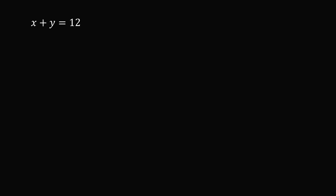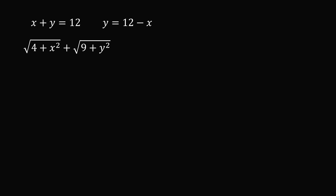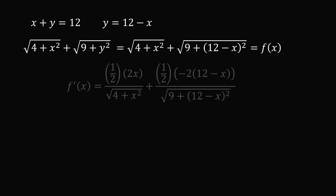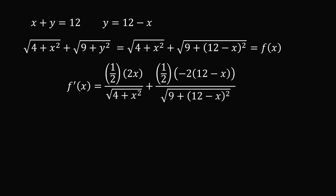If x plus y is equal to 12, then y is equal to 12 minus x. So we have the square root of 4 plus x squared plus the square root of 9 plus y squared, and we can substitute y equals 12 minus x. This gives us the square root of 4 plus x squared plus the square root of 9 plus the square of the quantity 12 minus x. This is a function of a single variable x, so we can solve this by taking the derivative with respect to x.